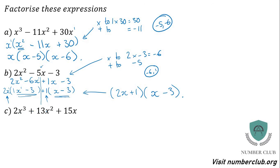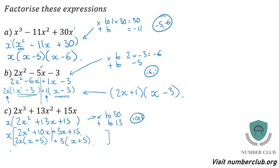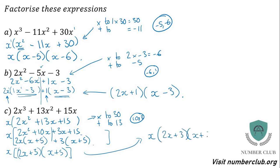For 2x³ plus 13x² plus 15x, factorise straight away by taking out x: x(2x² + 13x + 15). Find two numbers that multiply to 2 times 15 (which is 30) and add to 13 — those are 10 and 3. Rewrite as x[2x² + 10x + 3x + 15]. Split and factorise each pair: 2x(x + 5) plus 3(x + 5). The repeated bracket is (x + 5) and the floating terms give (2x + 3). Final answer: x(2x + 3)(x + 5).